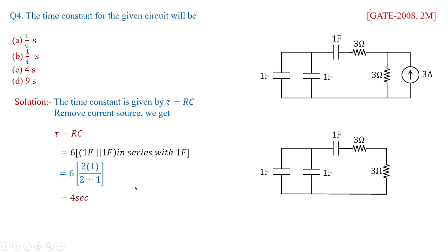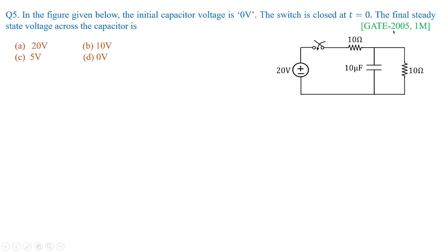Remember the formula for time constant of an RC network, and whenever you have a current source, replace it with open circuit. Option C is the right answer. In GATE 2005 for 1 mark, again a similar concept: the initial capacitor voltage is 0 volts, the switch is closed at t equal to 0, and we need to find the final steady state voltage across the capacitor. Options are 20 volts, 10 volts, 5 volts, and 0 volts.